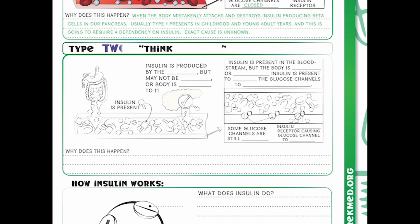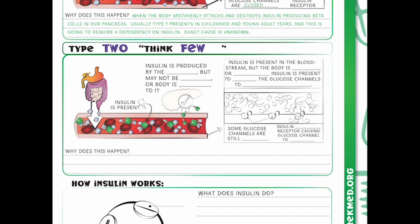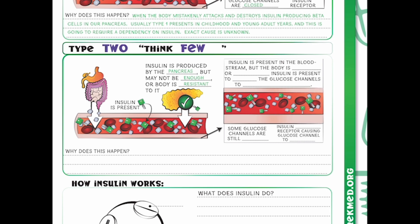Then we move into type 2. When we have diabetes type 2, we want to think 'few.' In this example, we eat food with blood sugar that enters our bloodstream. If we look here, we do have these green keys present — we do have insulin. Our insulin is produced by the pancreas, but it may not be enough, or the body is resistant to it. So insulin is present in our bloodstream, but the body is resistant, or there's not enough insulin to open the glucose channels to lower our blood sugar.